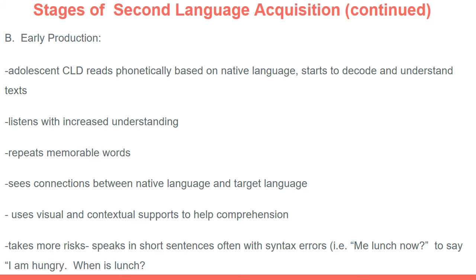In the early production stage, the ELL can start to read phonetically based on their native language pronunciation pattern — decoding words and understanding simpler text, though they might not pronounce words perfectly. They'll start to listen with increased understanding of what the teacher and peers are saying. They'll repeat very memorable words they find most important, such as 'lunch,' 'recess,' 'grades,' or 'homework.'